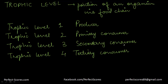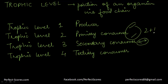The trophic level of an organism can be determined by counting the number of feeding relationships preceding it and adding 1. For example, if before a particular consumer there have been 2 relationships, you add 1, giving 2 plus 1, which is the trophic level of the secondary consumer. Basically, it's the number of arrows plus 1. In food webs, a single organism can occupy more than one trophic level. We will now construct a food web.